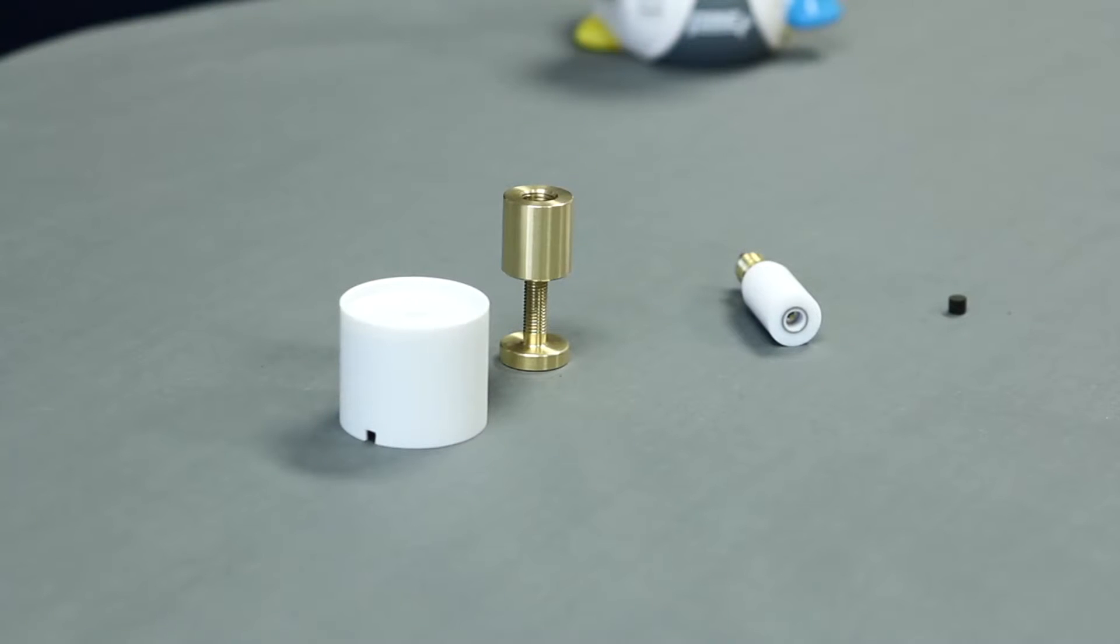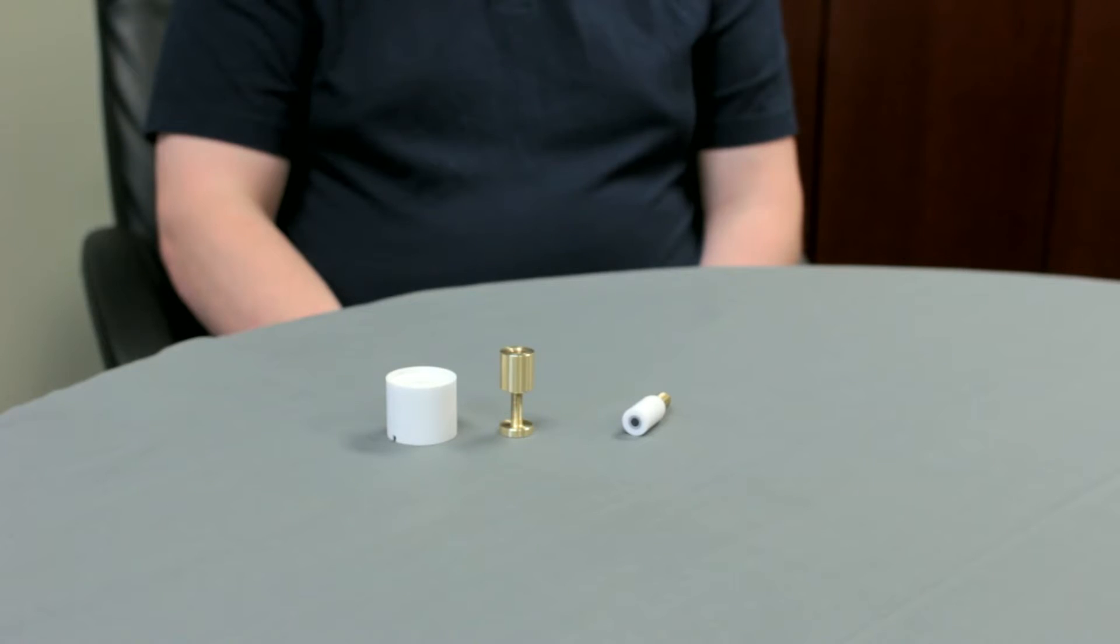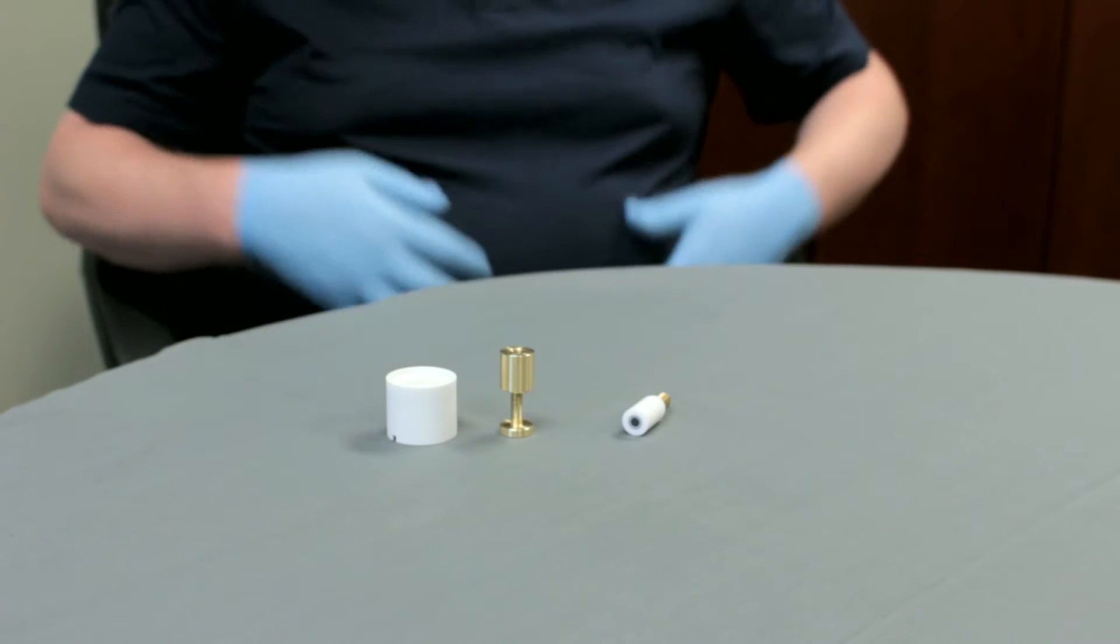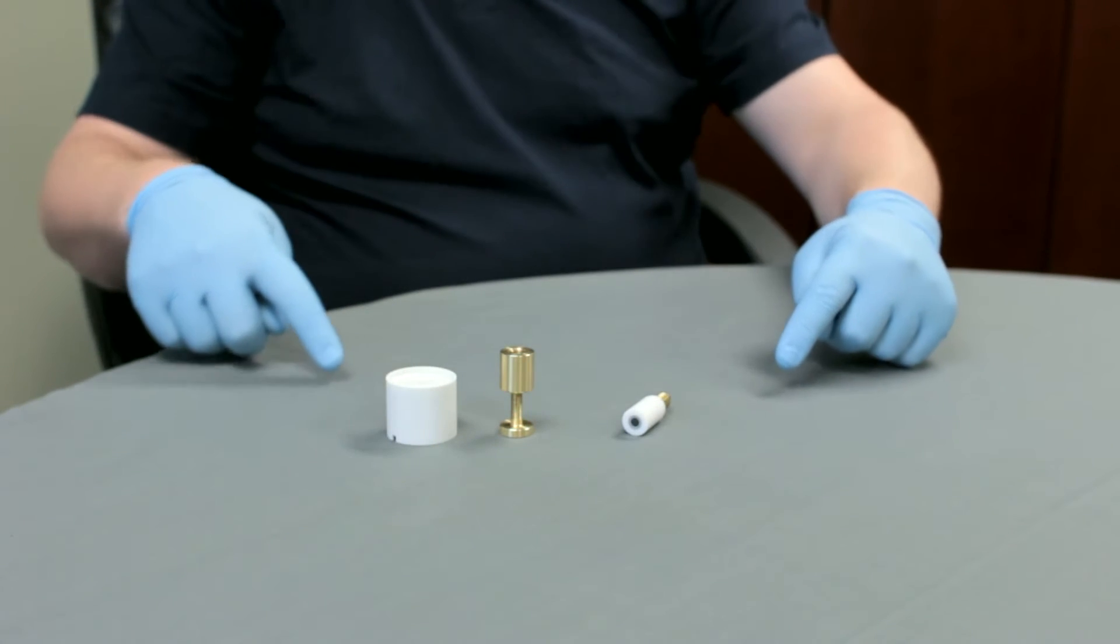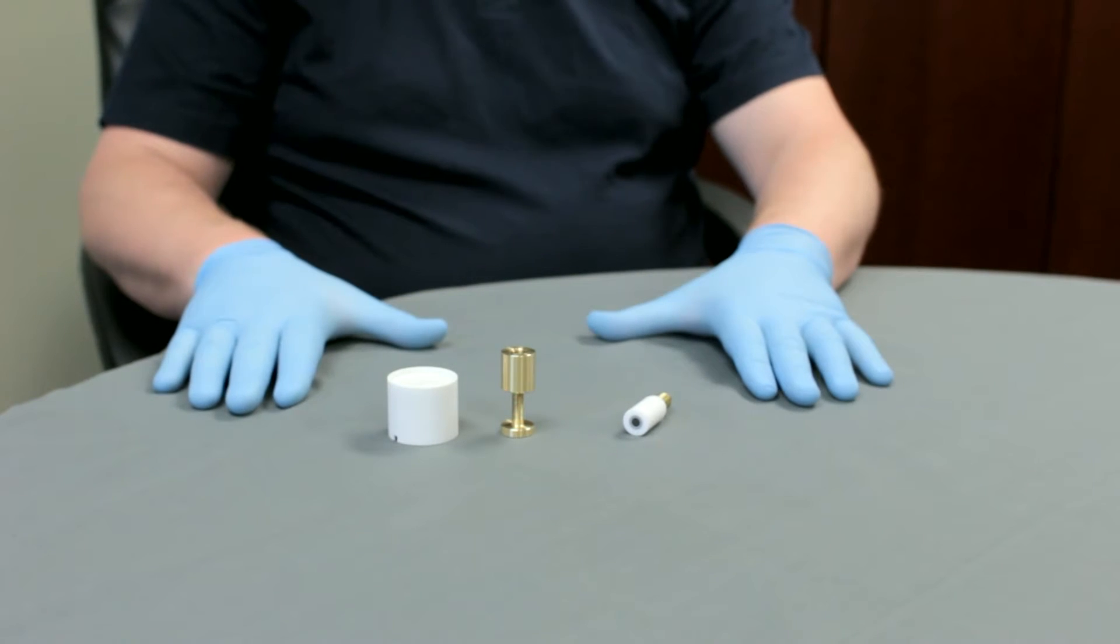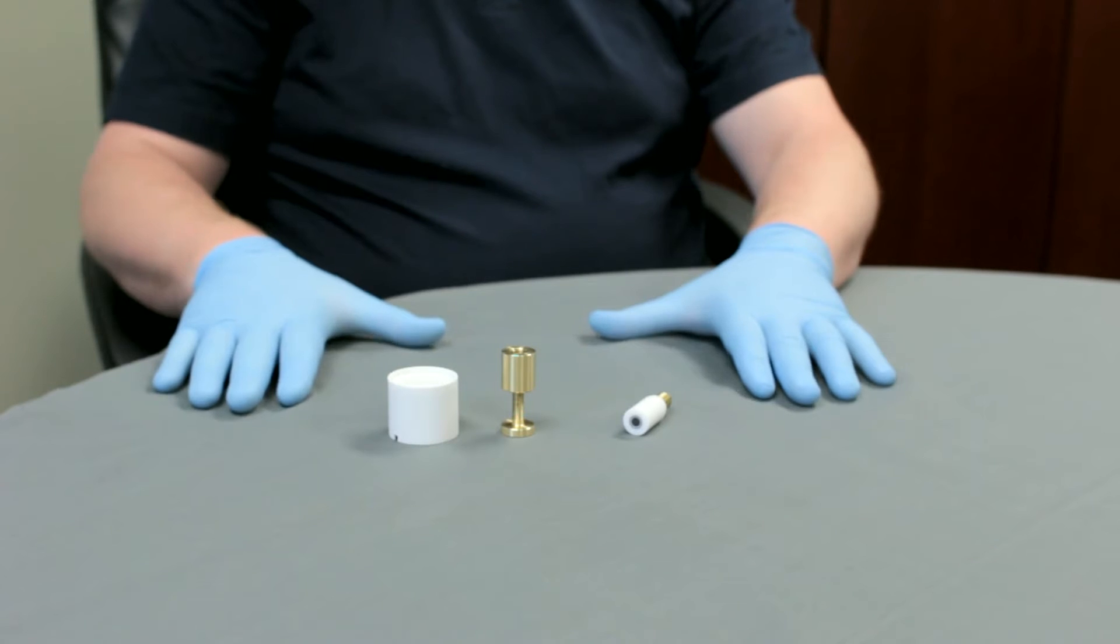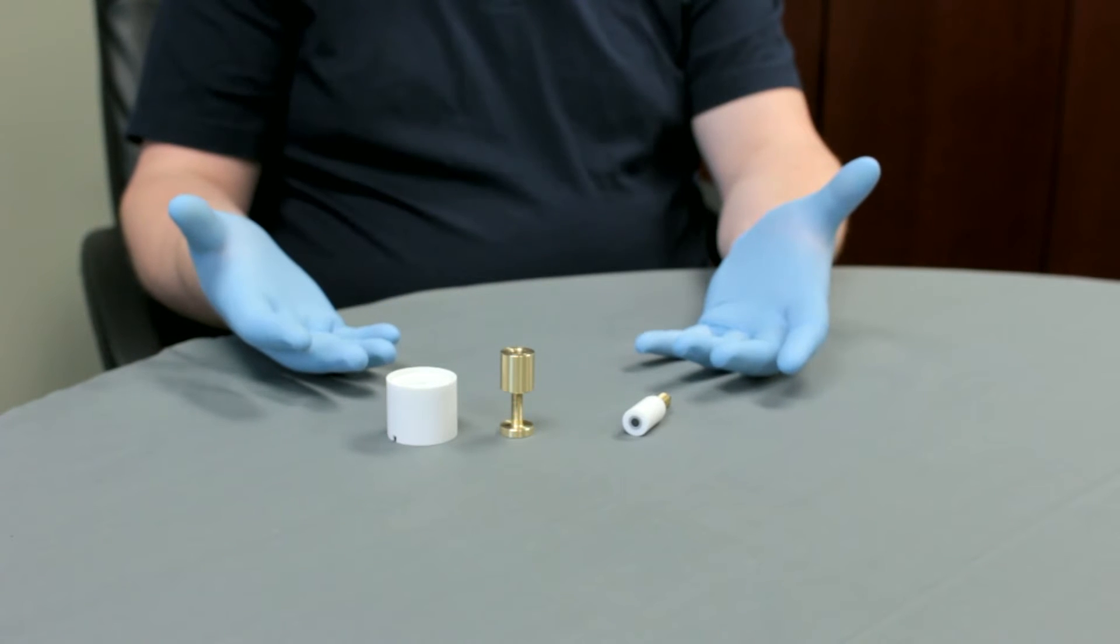For this video, we will be using the E6 series RRDE tip. Before assembling or disassembling a change disk RDE or RRDE tip, a clean surface should be prepared, with a shallow guard around the working area to prevent accidental loss of components during disassembling or reassembling. Gloves should be worn to minimize contamination to the electrode or component surface.